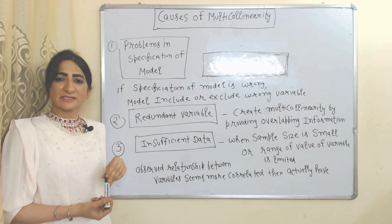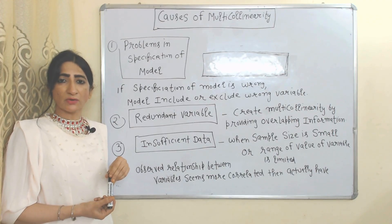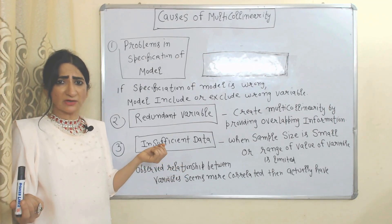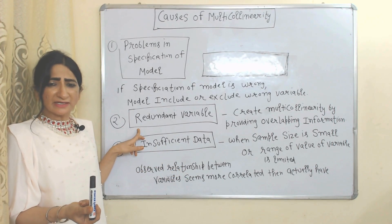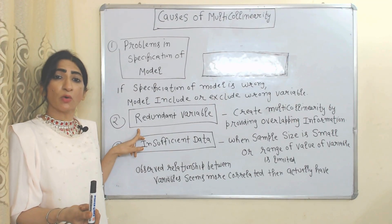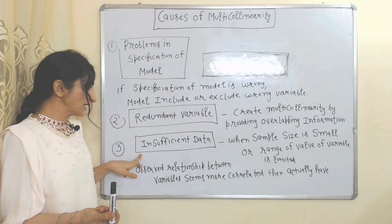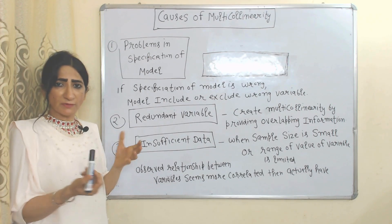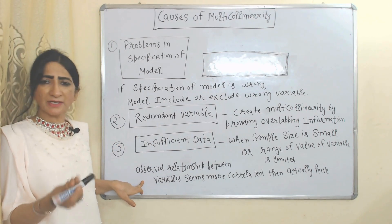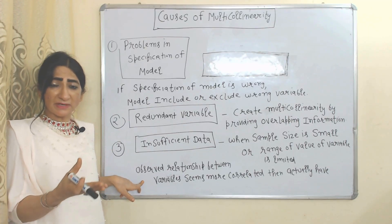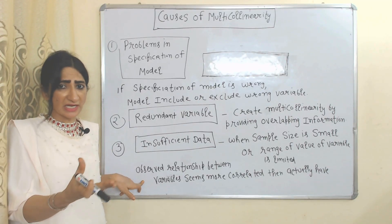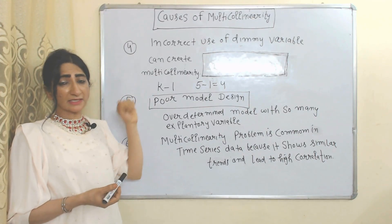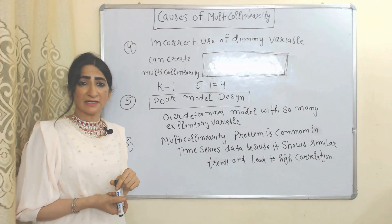Now we look at causes of multicollinearity. First, wrong model specification — sometimes the model includes or excludes wrong variables, which creates multicollinearity. Second, redundant variables create multicollinearity by providing overlapping information. Third, insufficient data — when sample size is very small or the range of values of a variable is limited, or the observed relationship between variables seems more correlated than it actually is.